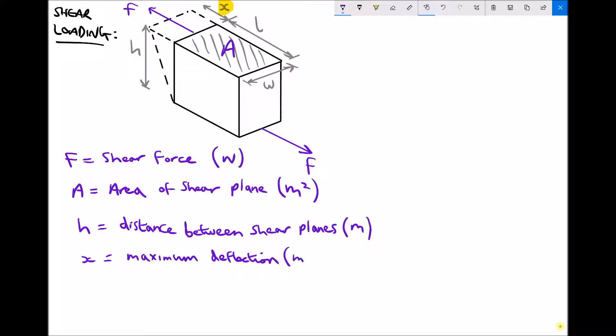We have some additional variables that we haven't seen before, although they're very similar to with direct loading. We have a variable called G, which is the modulus of rigidity. The SI units of modulus of rigidity are Pascals. The modulus of rigidity is very similar to the elastic modulus, except it's used when we're looking at shear loading rather than direct loading.